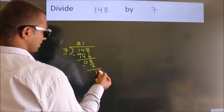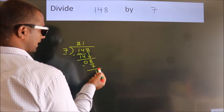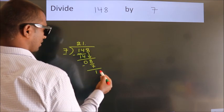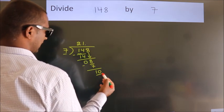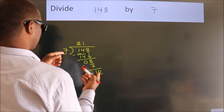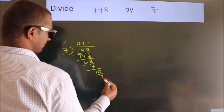After this, no more numbers to bring it down. So what we do is, we put a dot and take 0, so 10. A number close to 10 in the 7 table is 7 ones, 7.